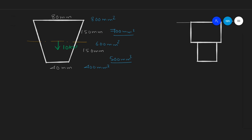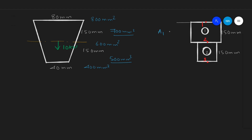The total length of the beam is 300 mm, divided into element number one and element number two. Each element consists of two nodes.